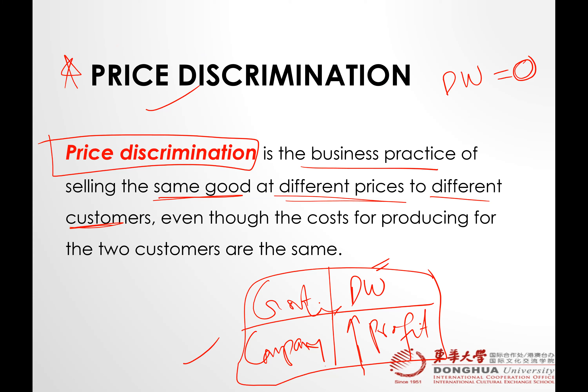Price discrimination is a common business practice of selling the same good at different locations, to different customers, at different prices. The product is the same, but it is sold to different customers at different prices in different places. Did you notice price discrimination when you are traveling by airplane? We have business class and economy class — the plane is the same, the destination is the same, but different customers are charged different prices for the same transportation service.